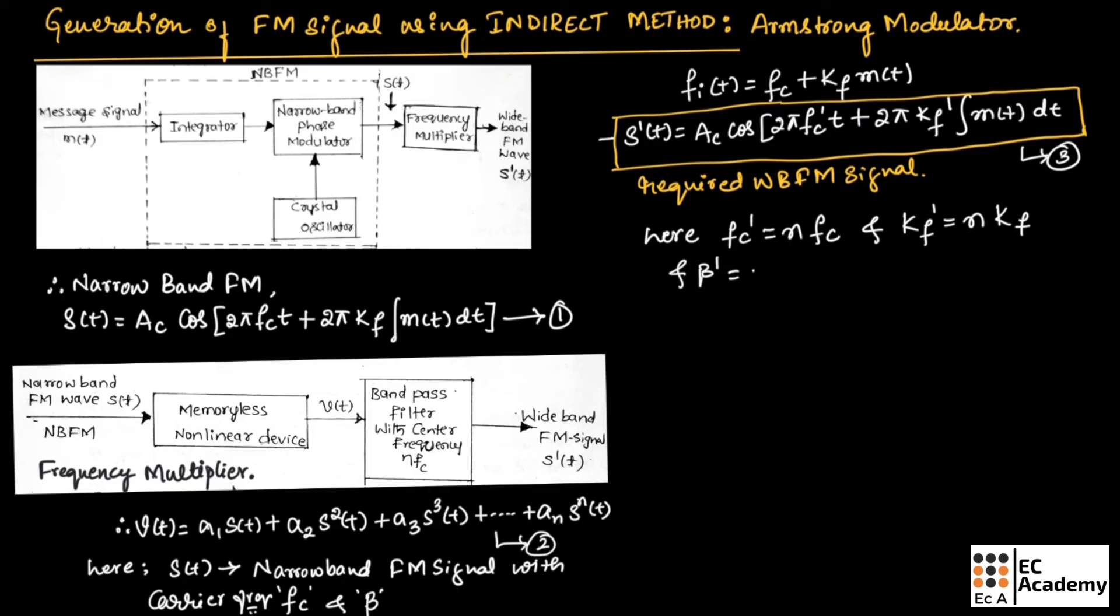The instantaneous frequency of wide band FM can be given as fi'(t) = fc' + kf' m(t).